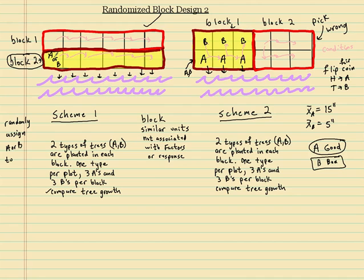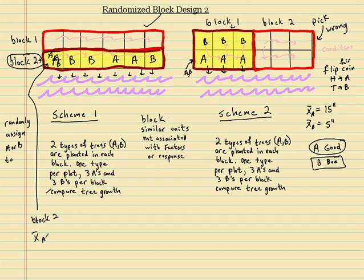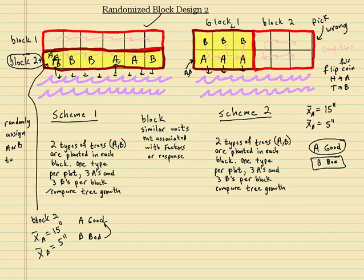Now with scheme one, I flip the coin and get A, B, B, A, A, B — mixing A's and B's within the near-water block. Looking at block two — the near-water block — I get an average growth for A of 15 inches and for B of five inches. Now if you work for A and say your tree was better, the person working for B can't complain, because you were next to the water just like they were next to the water. You're comparing everybody under the same conditions.